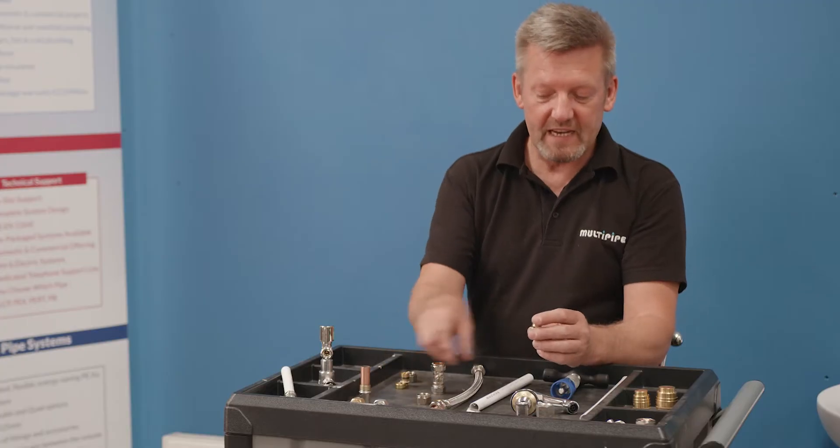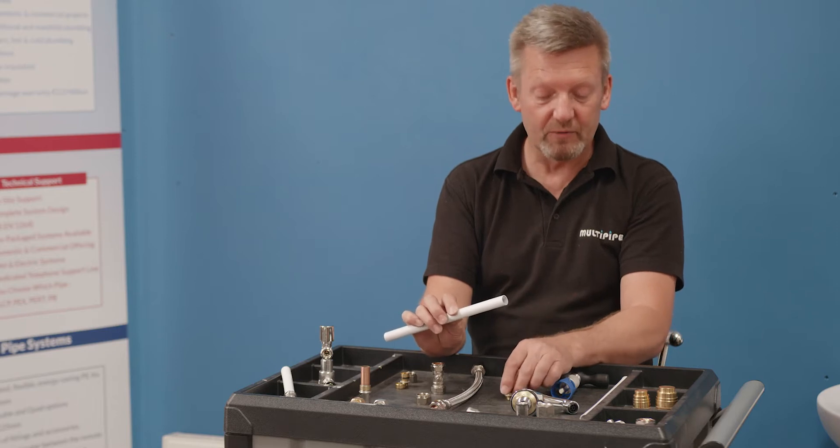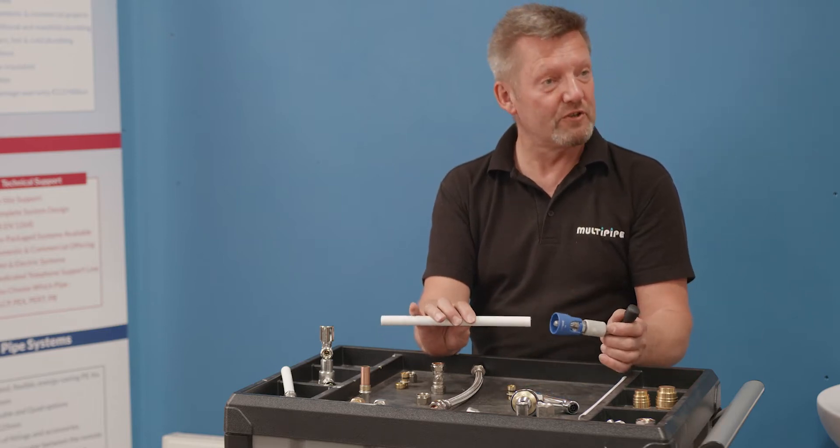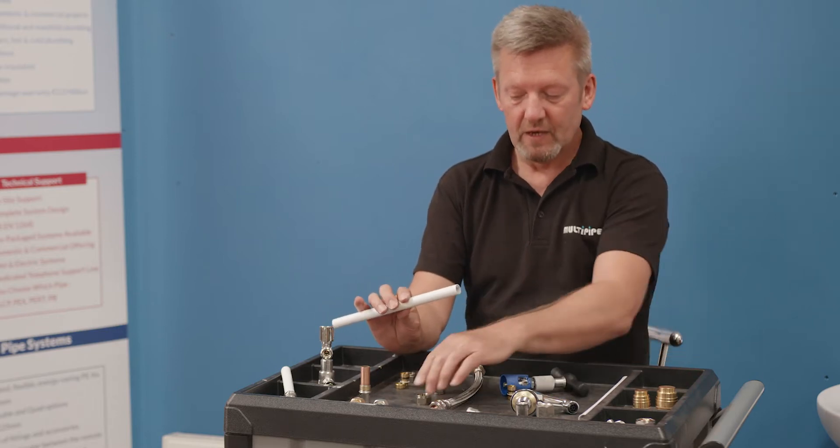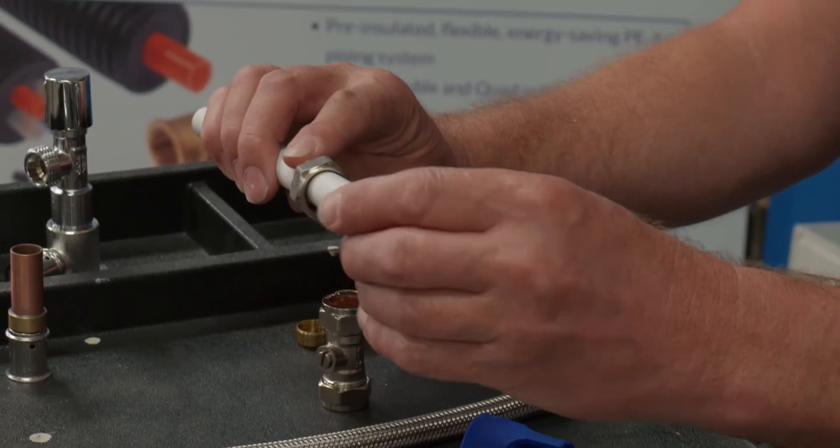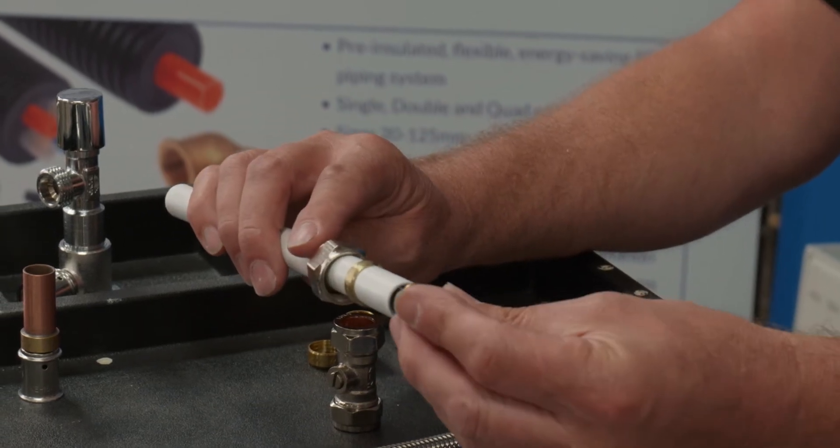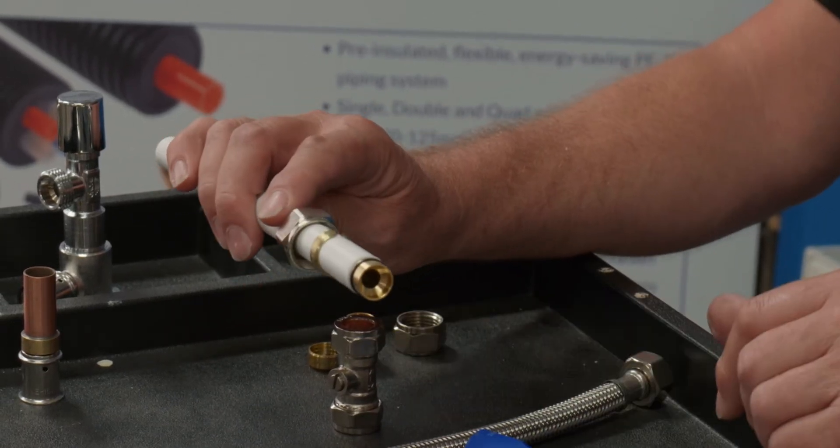And all you do then is with your 16mm MLC, you'll cut and bevel it and prepare it like you would normally do using a traditional beveling tool. Pop the nut on, slip the olive on, not directional so it doesn't matter which way it goes round. Pop the little insert assembly into the 16mm MLC